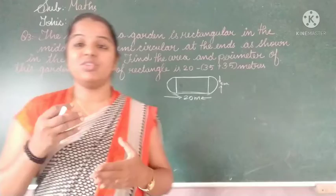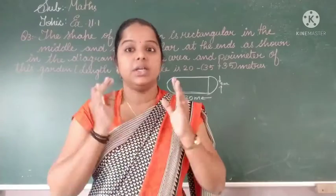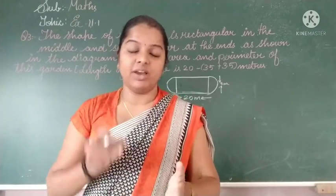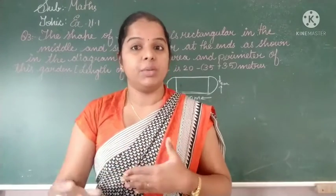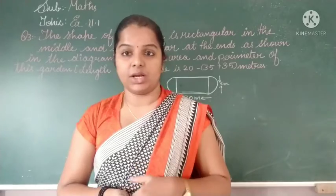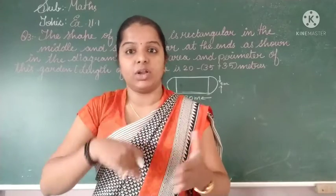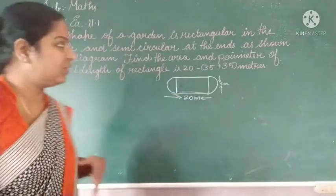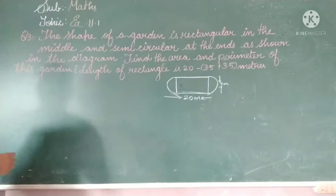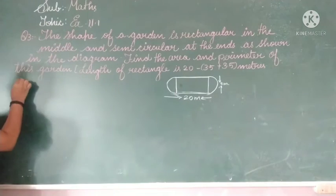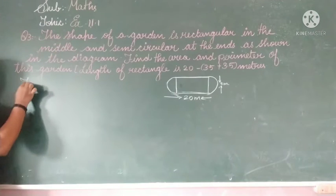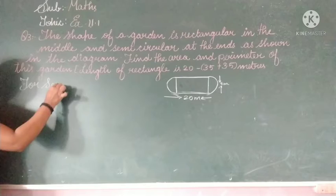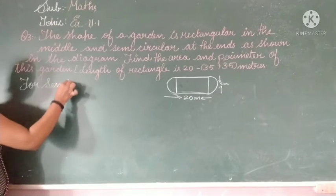So first, what will you find? You will find the area and perimeter of the semicircle, and also find the area and perimeter of the rectangle. You can do either one first. Okay, so first I am going to find the perimeter of the semicircle.